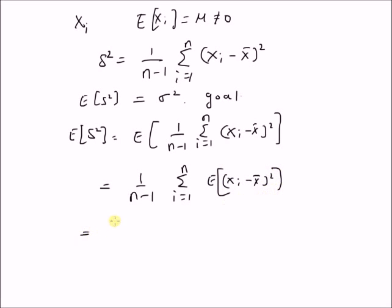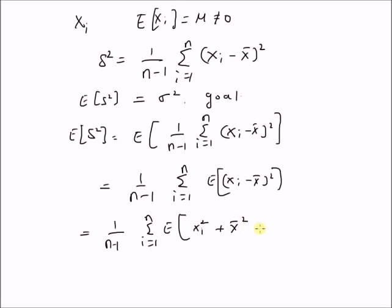This is equal to 1 by n minus 1, summation i equal to 1 to n, expectation of x_i squared plus x̄ squared minus 2 x_i times x̄.